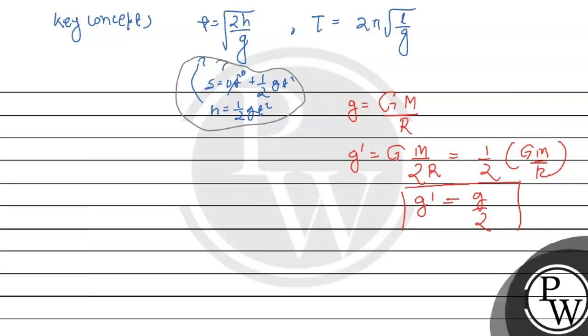For the other planet, T' equals 2 pi times square root of l by g'. Since g' equals g by 2, this becomes 2 pi times square root of 2l by g. The g cancels and we get T' in terms of the original parameters.